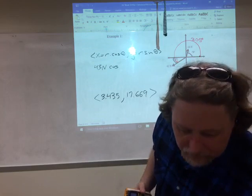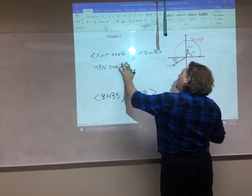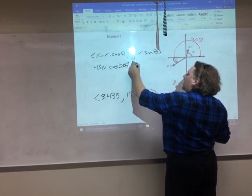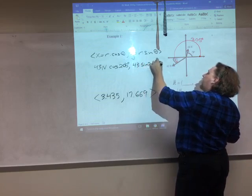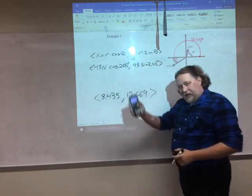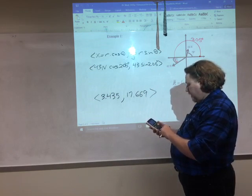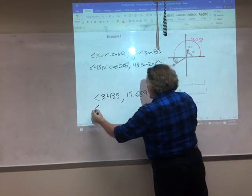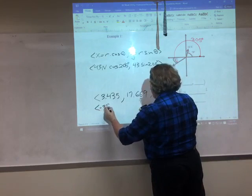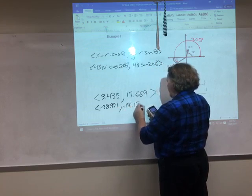205 degrees. So 43 Newtons times the cosine of 205 degrees is going to give me the Y component. And so again, here I go to my calculator. 43 cosine 205 and 43 sine 205 gives me, for this 43 Newtons vector, I have negative 38.971 and negative 18.173.